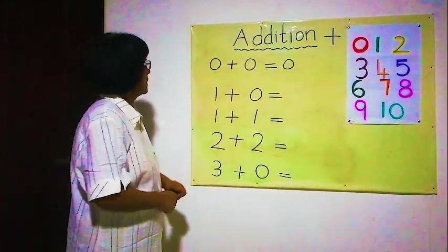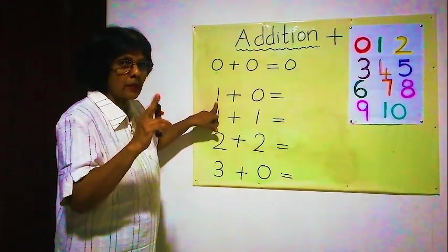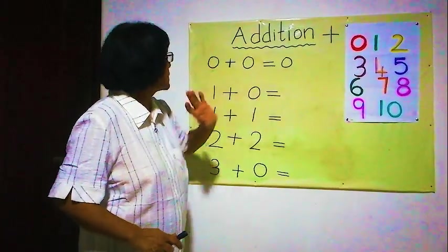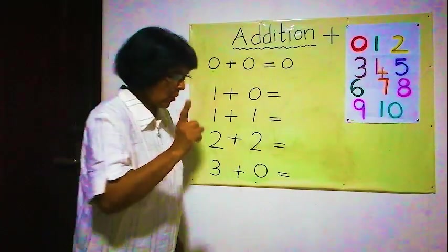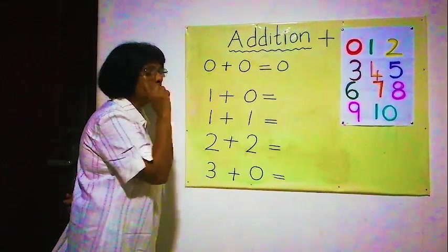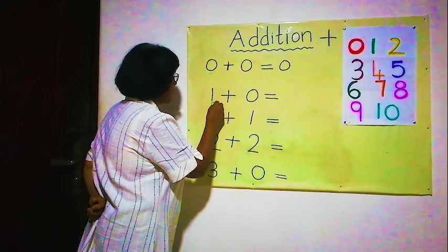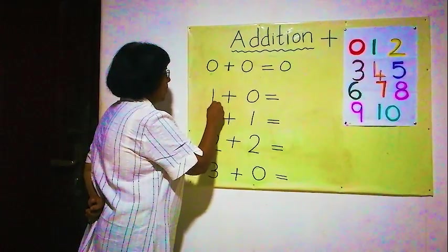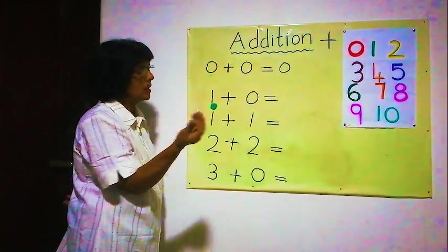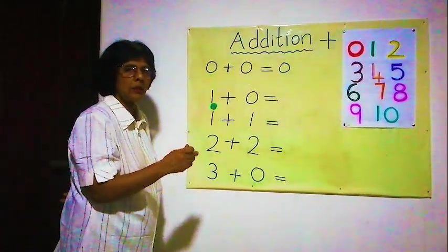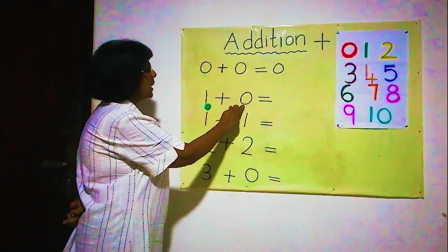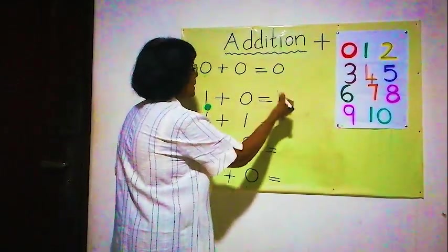Now the next one. The first number is one. One and zero — what's the answer? One means there's something here, so I must draw one picture. We draw a ball here — one ball. Now here one ball, and zero means nothing. Can I draw another one? No, can't draw anything, there's nothing, no value. Zero means nothing, so the answer is one. One and zero makes one.